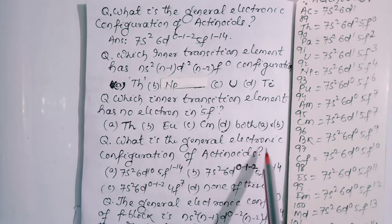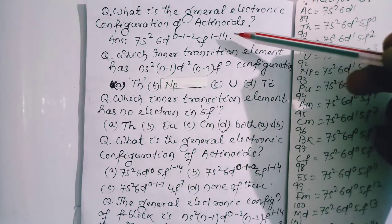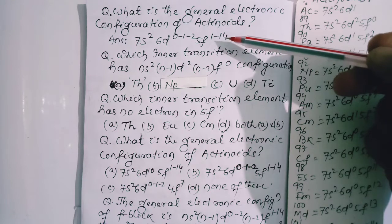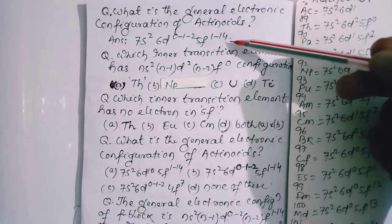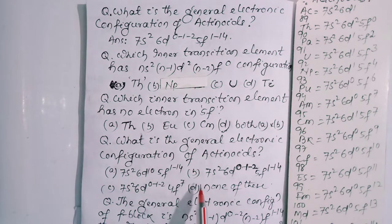What is the general electronic configuration of actinoids? It is given here 7s² 6d⁰/¹/² 5f¹⁻¹⁴. So option B is correct.